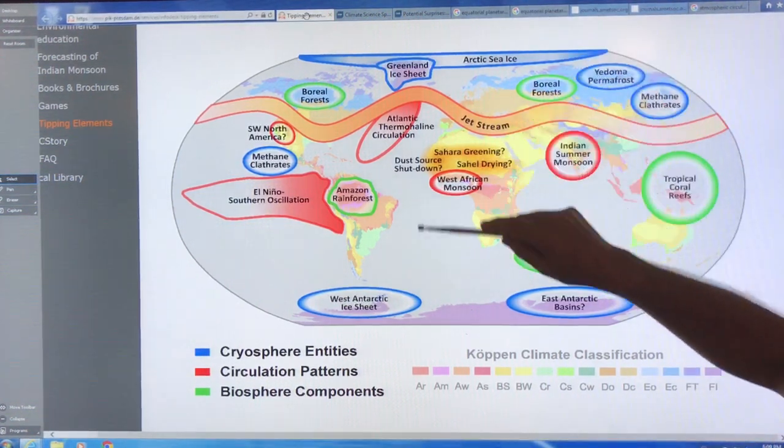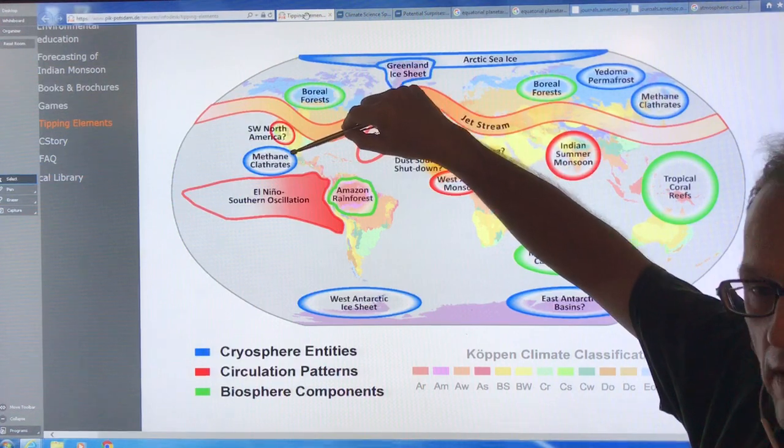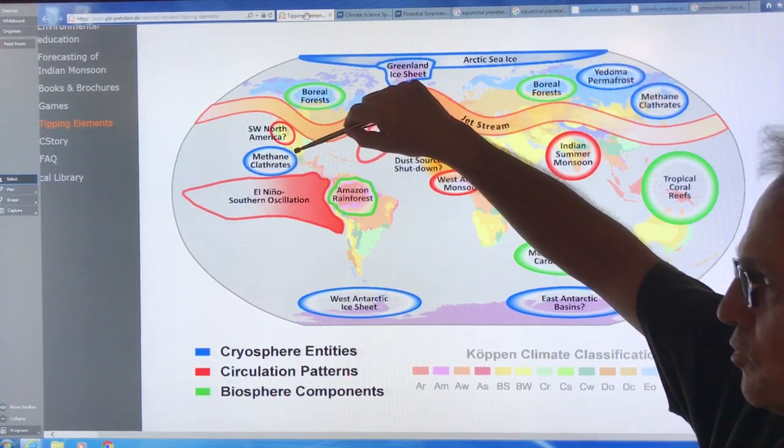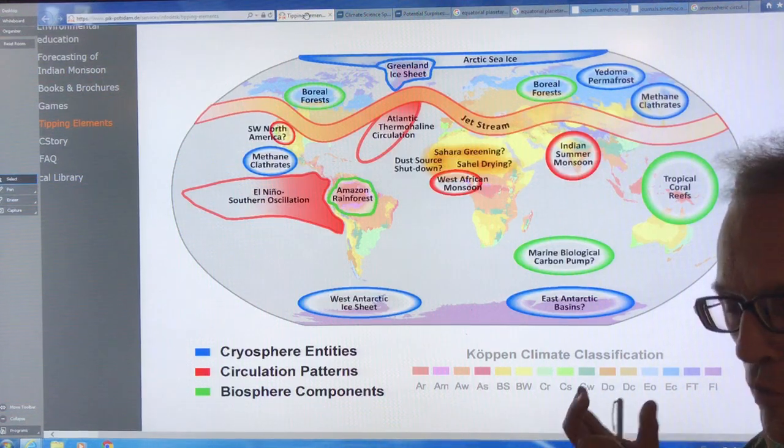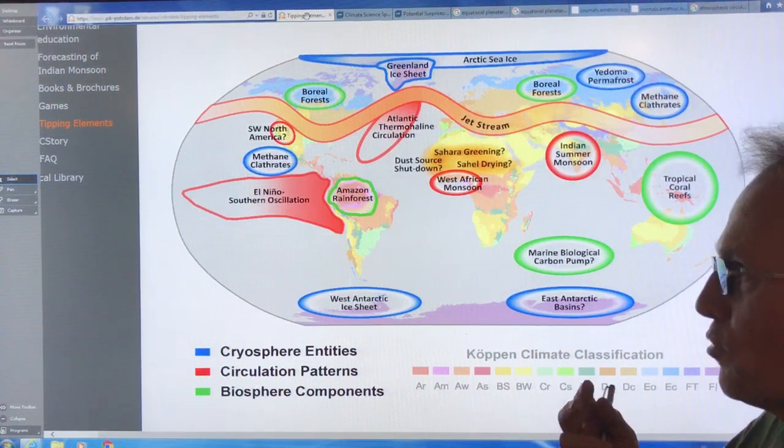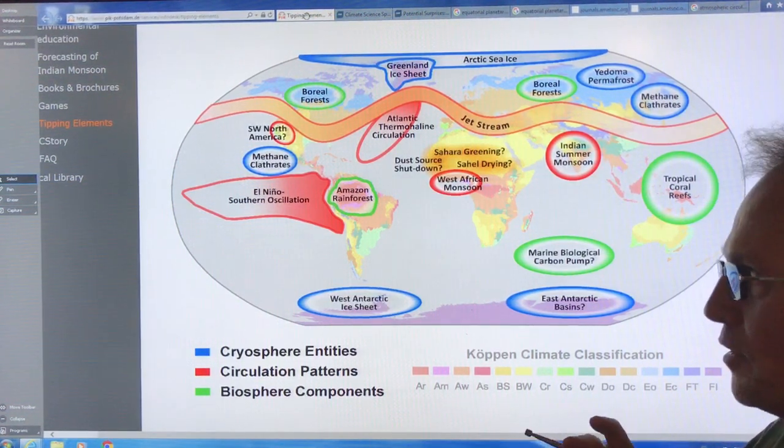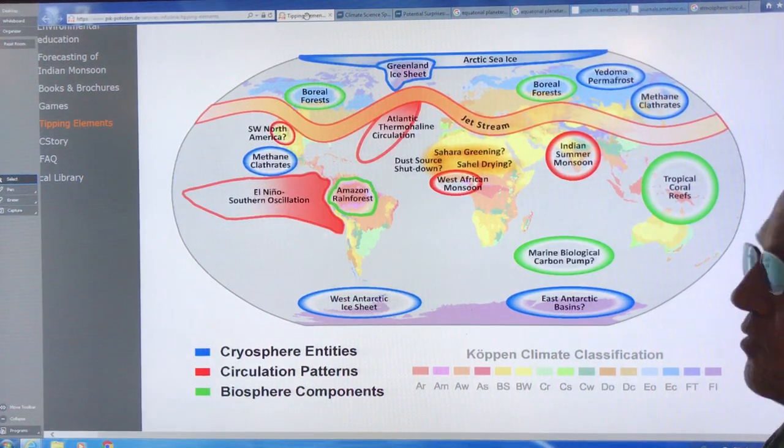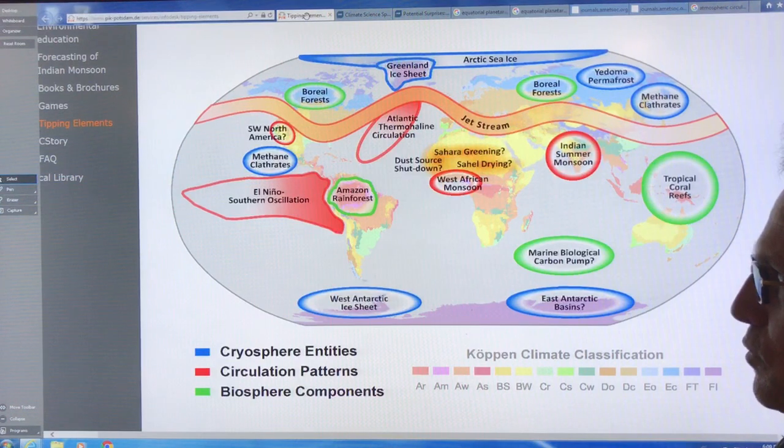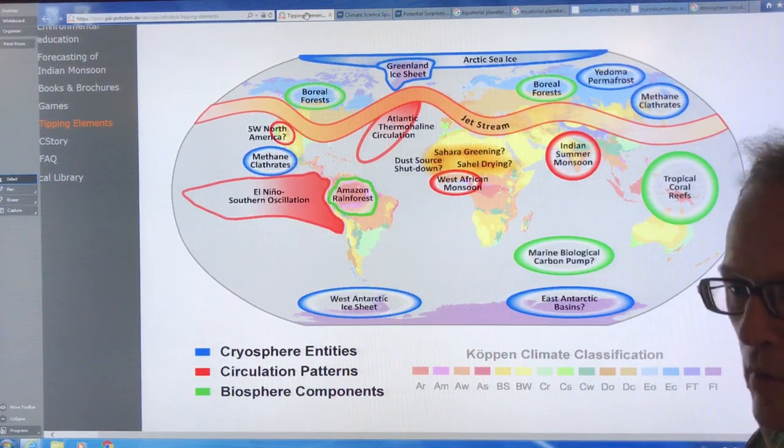So we've covered the cryosphere here, but we also have methane clathrates that are that because of high pressure and low temperatures, the methane forms in these clathrate crystal patterns of frozen ice surrounding methane. As these things thaw, the methane is released, bubbles up, can enter the Earth's atmosphere.